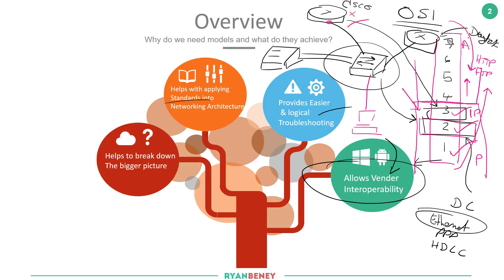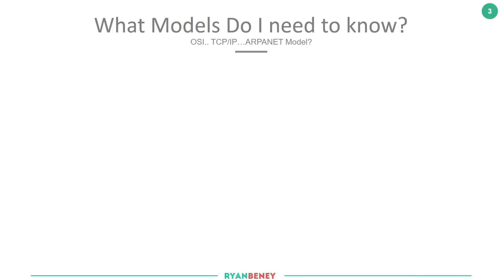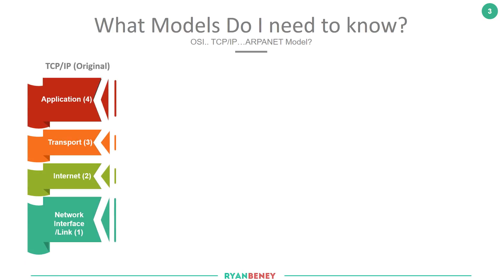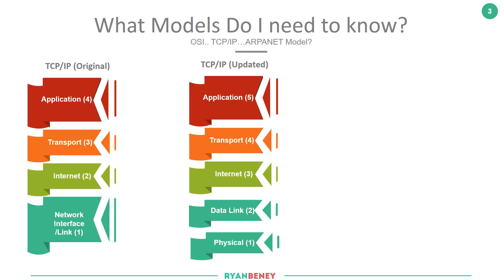Let's jump into the models, their history, how they came about, and what you need to know for your CSEN certification. Initially it started with the ARPANET reference model in the 1970s, then moved into the widely adopted TCP/IP model, sometimes referred to as the DoD model. It initially started with just four layers, then as time progressed they split the bottom into two — data link and physical — making it a five layer model.